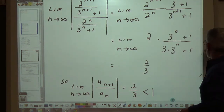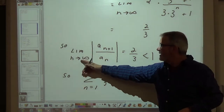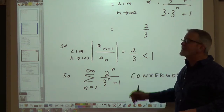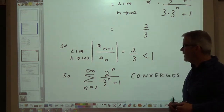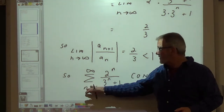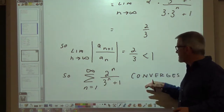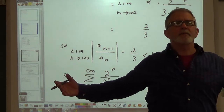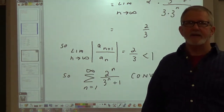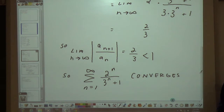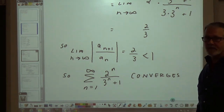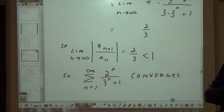So the limit of the (n+1) term over the nth term is equal to 2/3. Since 2/3 is less than 1, this series converges by the ratio test. There are probably at least a couple of other tests I could use on this particular series — the direct comparison test would be another — but this was a nice example using the ratio test.